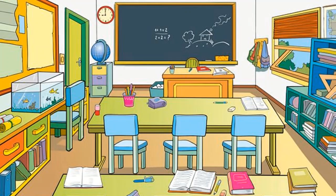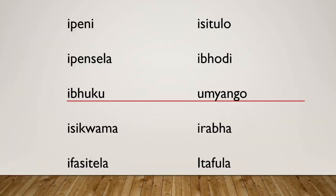So what I've done here, once you are done drawing, I've given you some words. Let's see the words that you can use to label some of your things in IsiZulu. I did not put the English word because I need you to remember what it is. So: ipeni, ipensela, ipuku, isikwama, ipasitela, isitulo, ipodi, umnyango, irapa, and itafula. Those are the words. I know that some of you know way more than that — we had a lot of words in our vocabulary in our blue book — but these are the things that I want you to label.